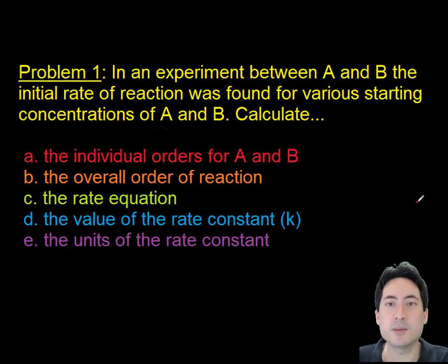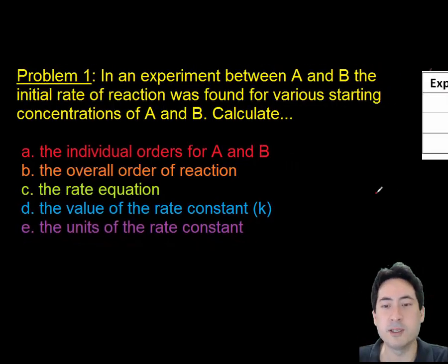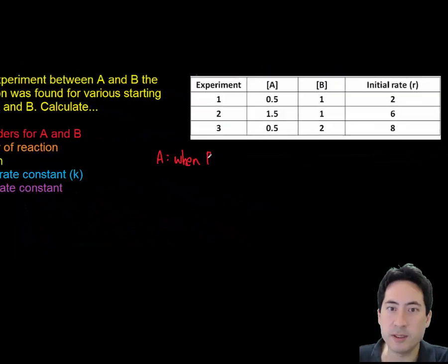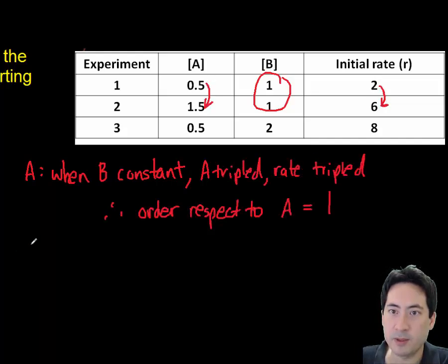So this is the first problem. In an experiment between A and B, the initial rate of reaction was found for various starting concentrations of A and B. Calculate the individual orders for A and B, the overall order of reaction, the reaction rate, the value of the rate constant, and the units of the rate constant. So I put them in different colors here. So let's look at A first. So let's keep B constant and let's go and triple A in experiment one and two. If we triple A, we triple the reaction rate. So that must be first order.